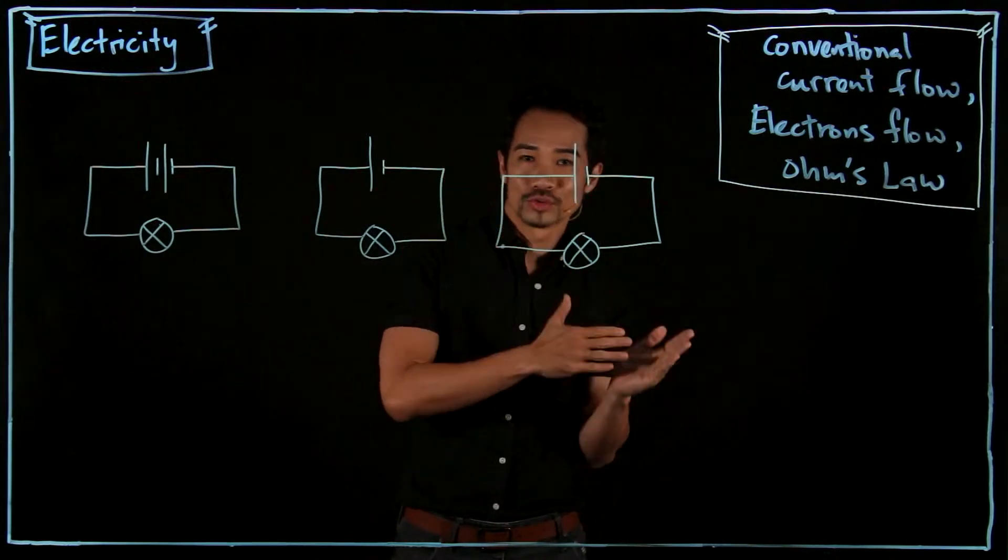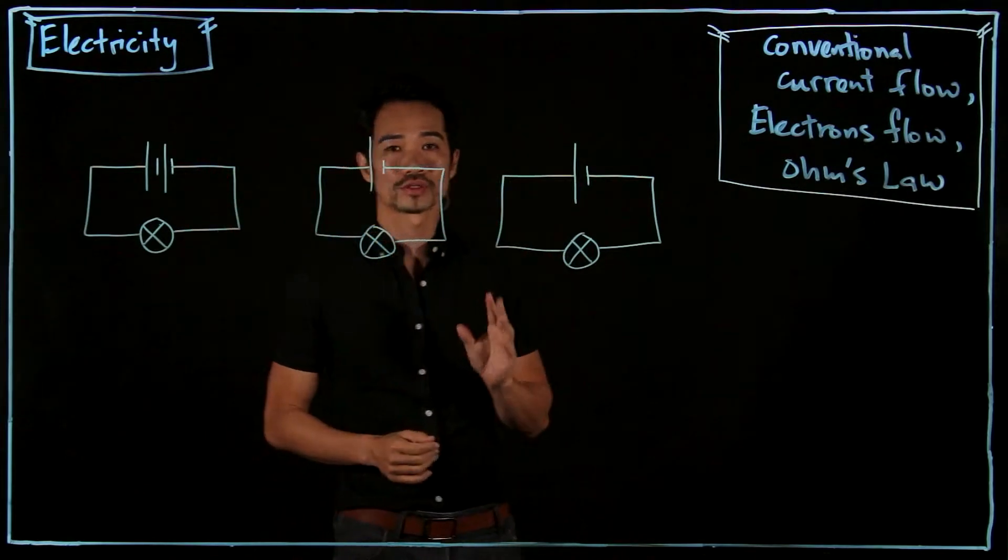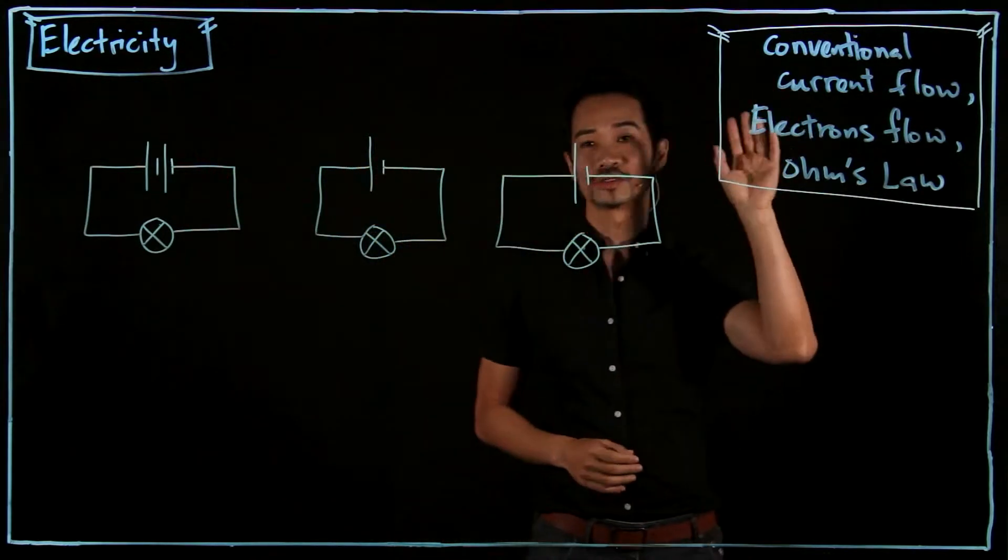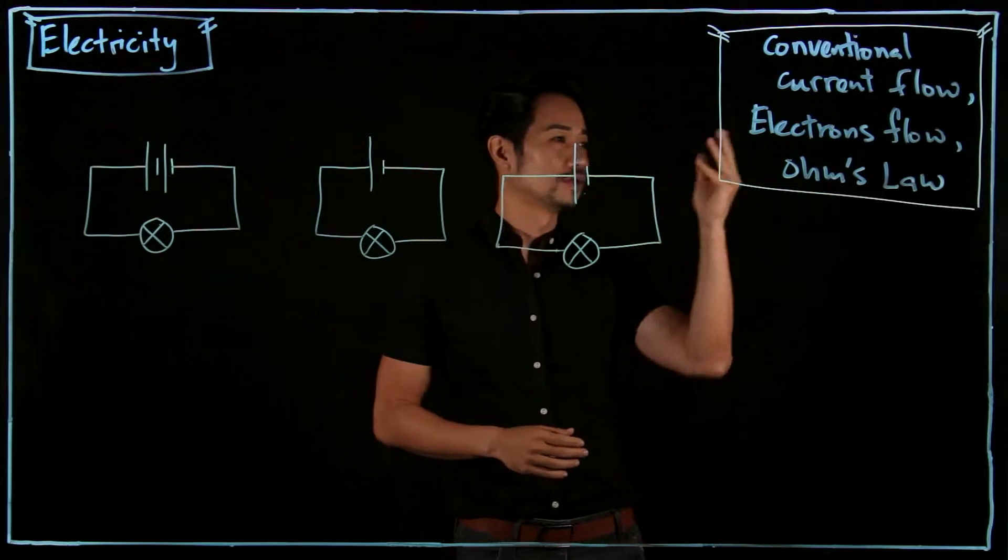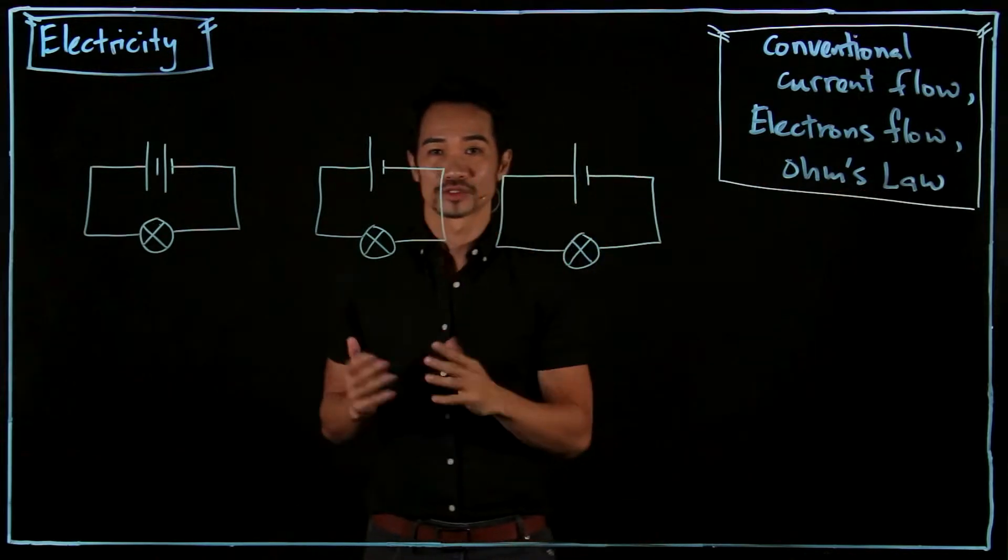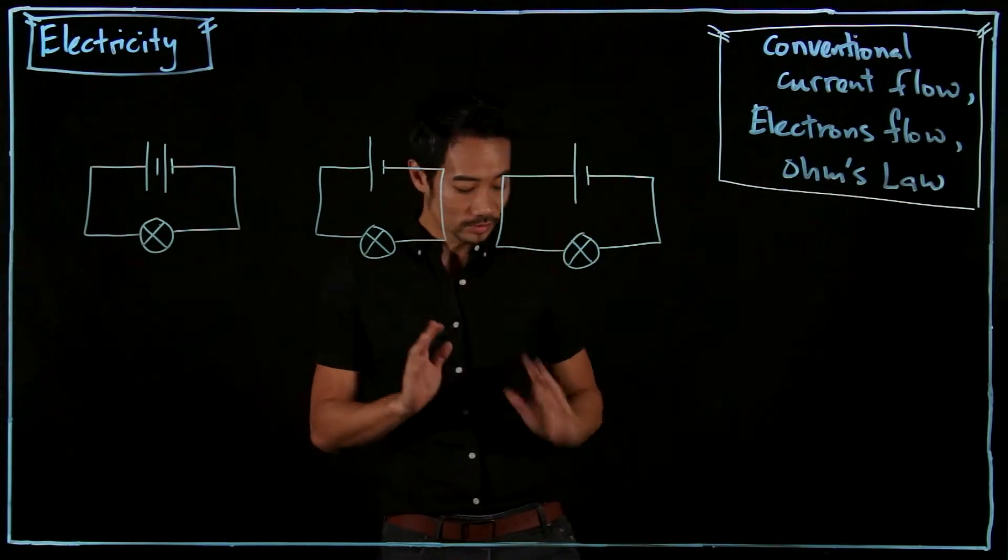Today we're going to go on a new section on electricity. We're going to talk about conventional current flow, electrons flow, and an introduction to Ohm's law. So this is going to be quite simple.